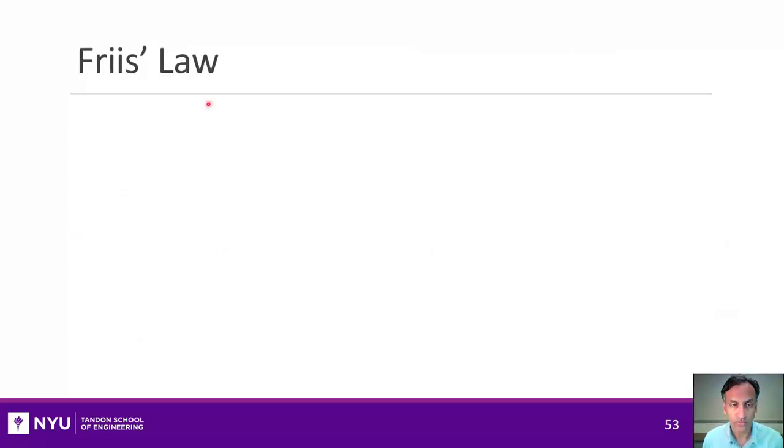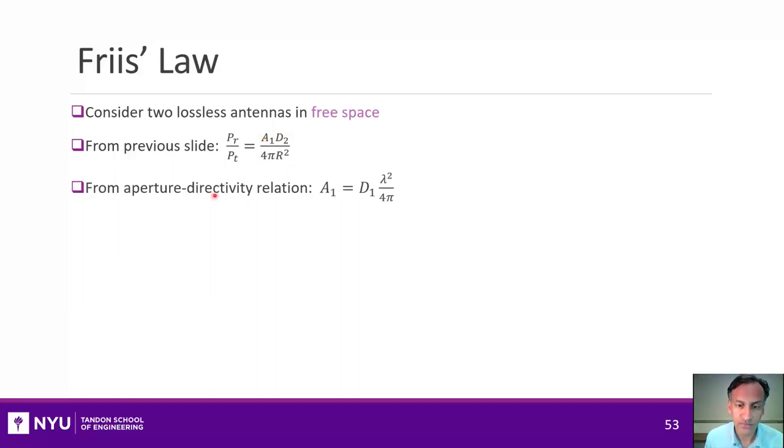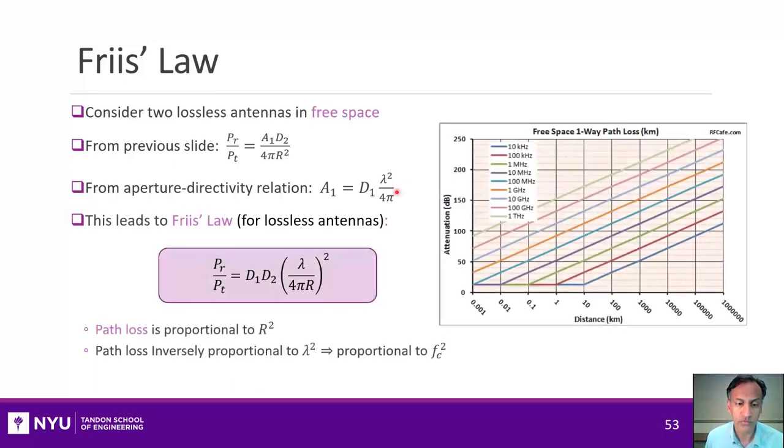A very important consequence of the aperture directivity relationship is Friis' law. To explain this, suppose we have two lossless antennas in free space. We know from the previous slide that the ratio of the received to transmit power is given by this expression here. We know also from the aperture directivity relationship that the aperture on the transmit side will be this directivity times lambda squared over 4 pi. When you put these in, we get Friis' law for lossless antennas, which tells you that for any two antennas, the ratio of the received to transmit power is given by this very simple expression.